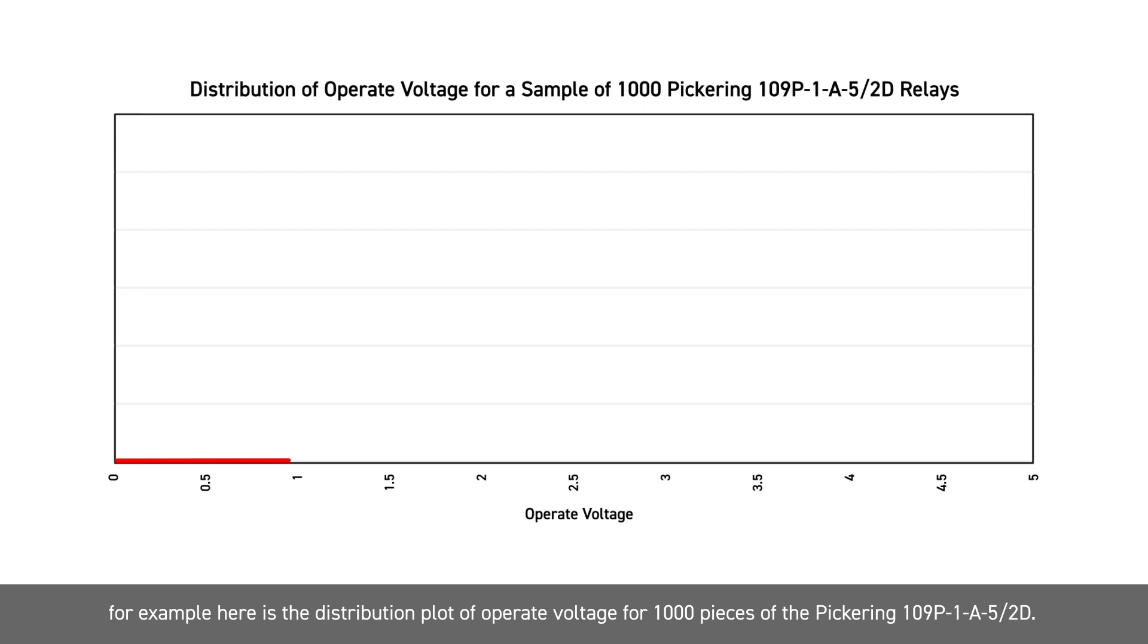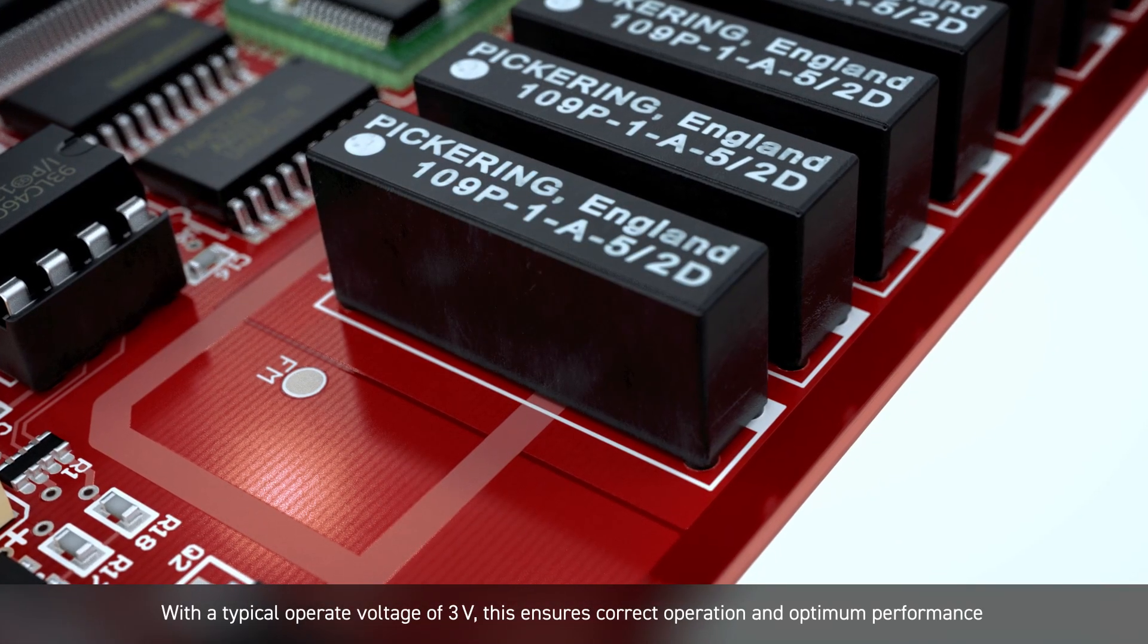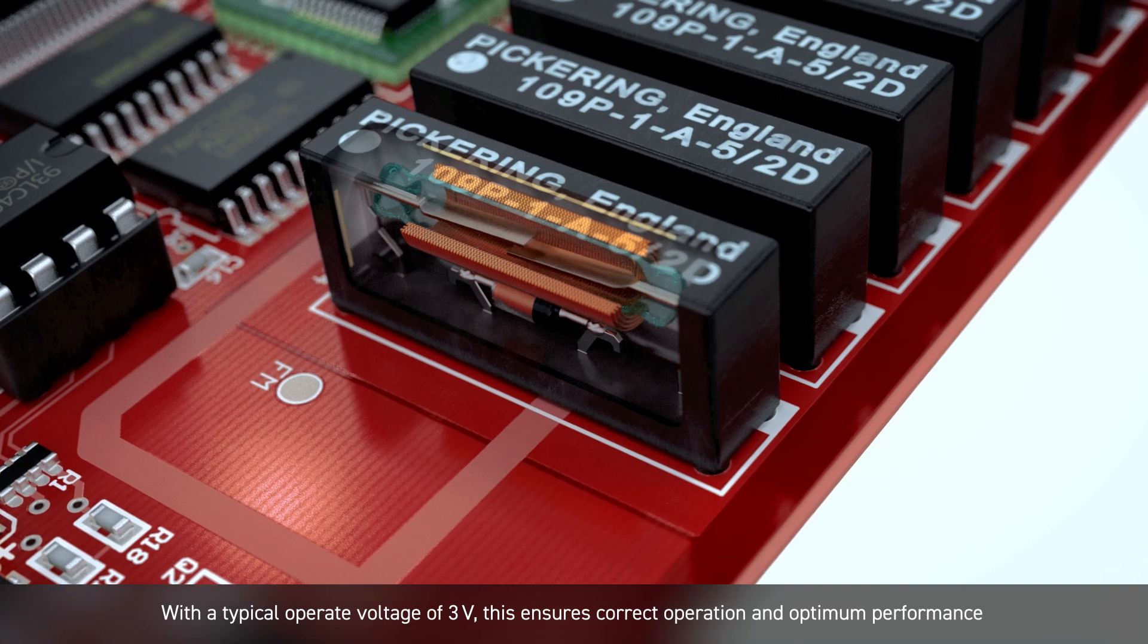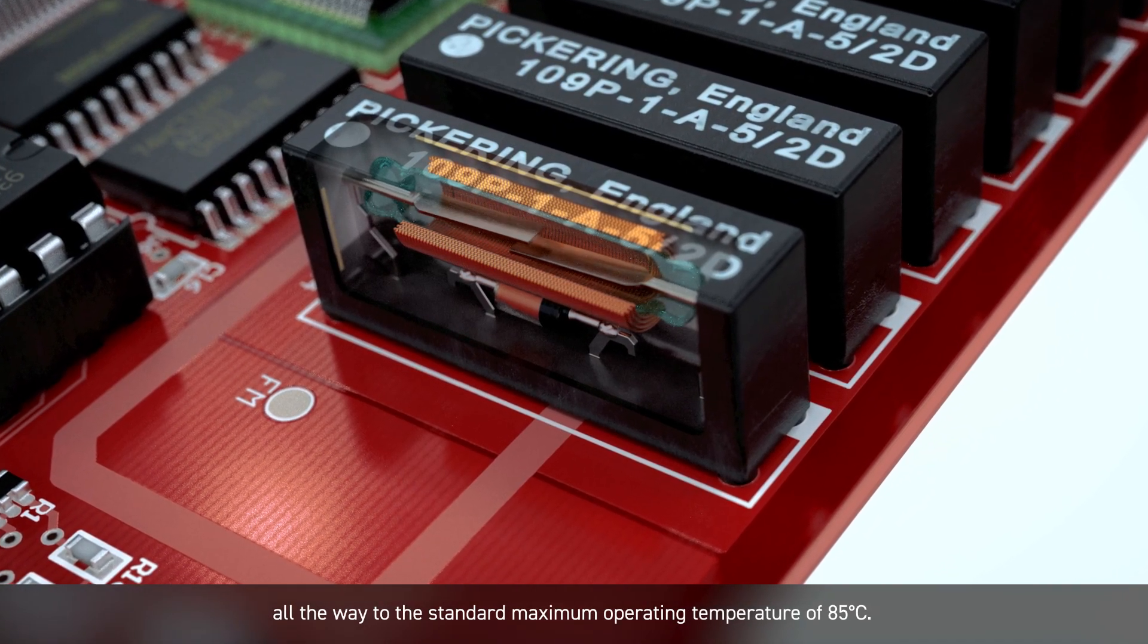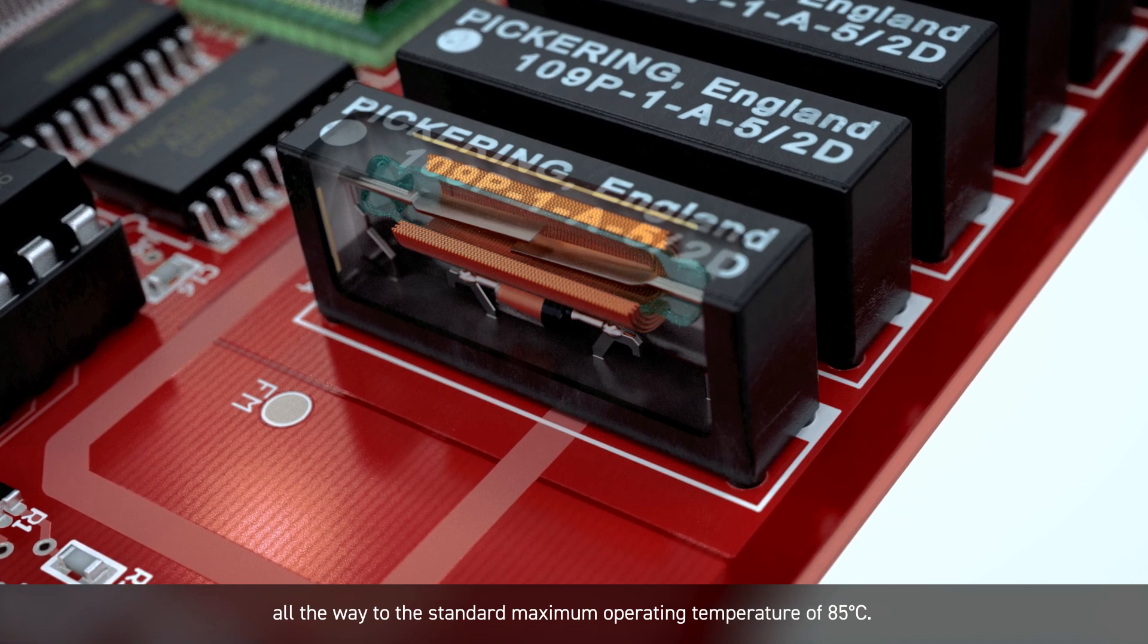For example, here is the distribution plot of operate voltage for a thousand pieces of the Pickering 109P1A52D. With a typical operate voltage of 3 volts, this ensures correct operation and optimum performance all the way to the standard maximum operating temperature of 85 degrees Celsius.